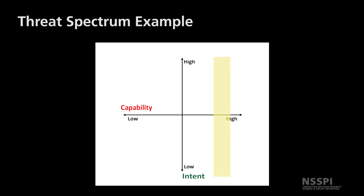Now let's analyze its intent. Its intent might be different in regards to each country. For country D, they have the highest intent — it is a bordering country, there are cells located in country D, and it is easy to access to attack country D. Country B might be next, as there are lone wolf actors active in country B and it has a recently radicalized public. However, country B might feel comfortable that it is less likely to suffer a large-scale attack because of distance, though this could affect their analysis of the group.